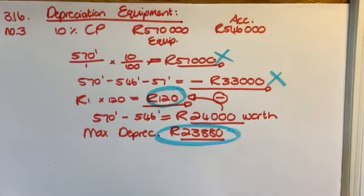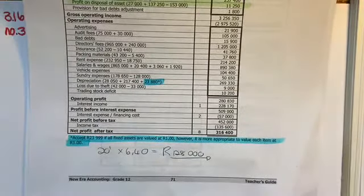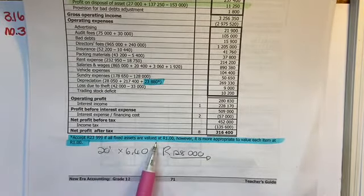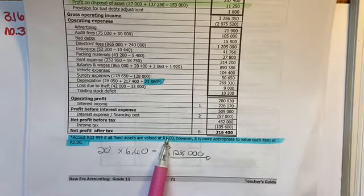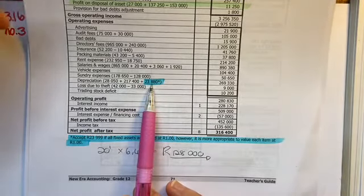So if you go to your income statement, your depreciation is sitting under expenses. Do note that they say at the bottom they would have marked it correct if you say 23,900, like forgetting that there were 120 items, so there's some grace for that. But there's the 23,880 as depreciation.